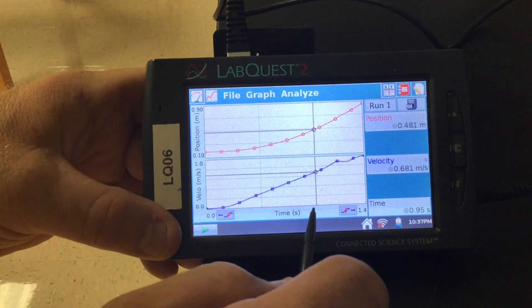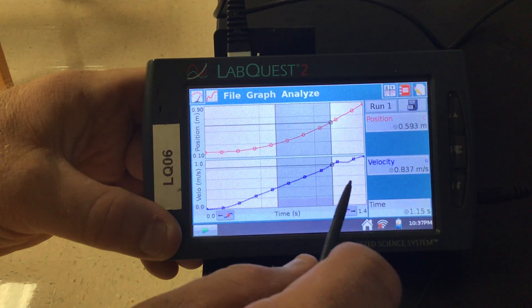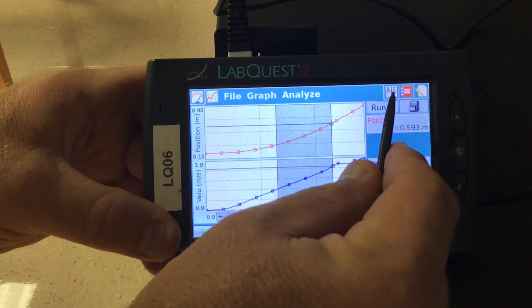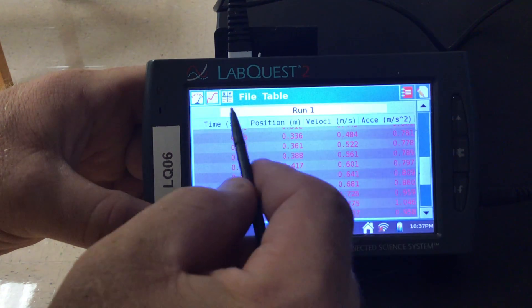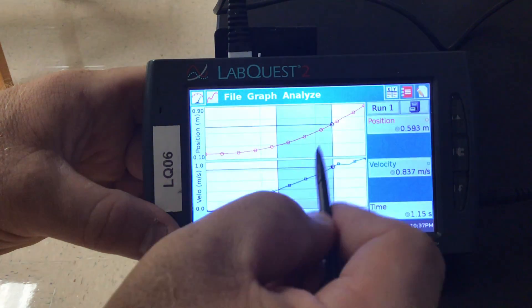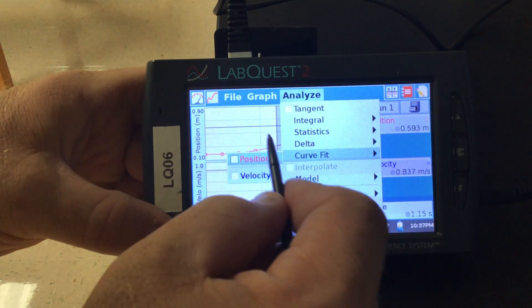So I can find duration by clicking and dragging. I can find maximums and minimums by using my data table. And I can find slopes by using the Analyze Curve Fit option.